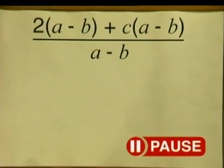I hope you are beginning to recall all of this from Grade 9. We now move into more complex fractions. Can you simplify this one? 2 multiplied by (A minus B) plus C multiplied by (A minus B), all divided by (A minus B).